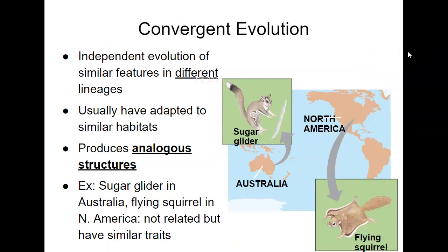Now comes the conundrum of convergent evolution. Convergent means they have converged to look the same, but it is not a result of relatedness. Two organisms can look very similar but not be genetically related. That's where Lamarck once upon a time had trouble — he organized everything by appearance and wasn't able to prove common ancestry because of convergent evolution. This is where analogous structures come in: they are structures that look the same and provide the same function, but are not related. The North American flying squirrel and the Australian sugar glider both have similar flaps so that they can glide, but they are very distant in terms of their relatedness.